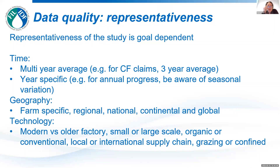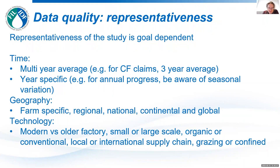On geography, you can have different scales: farm-specific, regional, national, continental, and global — and it depends on your research question what you choose. On technology, just to point out some differences: you have modern or older factories, small or large-scale farms, organic and conventional dairy farming, local or international supply chains, and grazing or confined farming systems. If you want to do a carbon footprint of a certain product or company, the technology that you model must be representative for those circumstances.